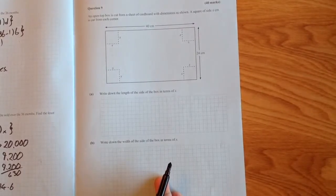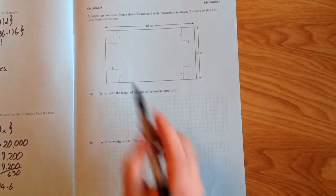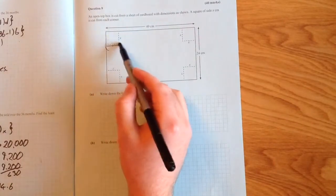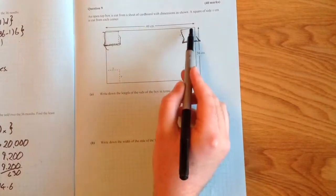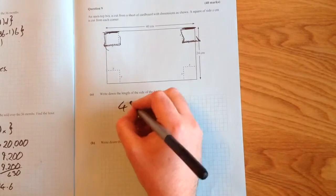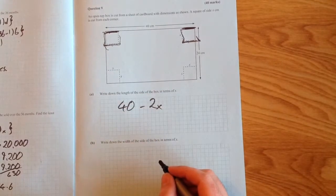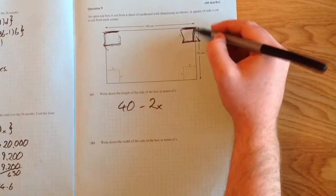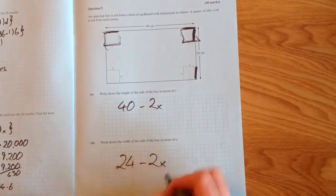The first question asks to write down the length of the box in terms of x. The length is 40 before the squares were taken out. It loses an x on each end, so it's 40 minus 2x. The width is 24, and it also loses an x on each end, so the width is 24 minus 2x.